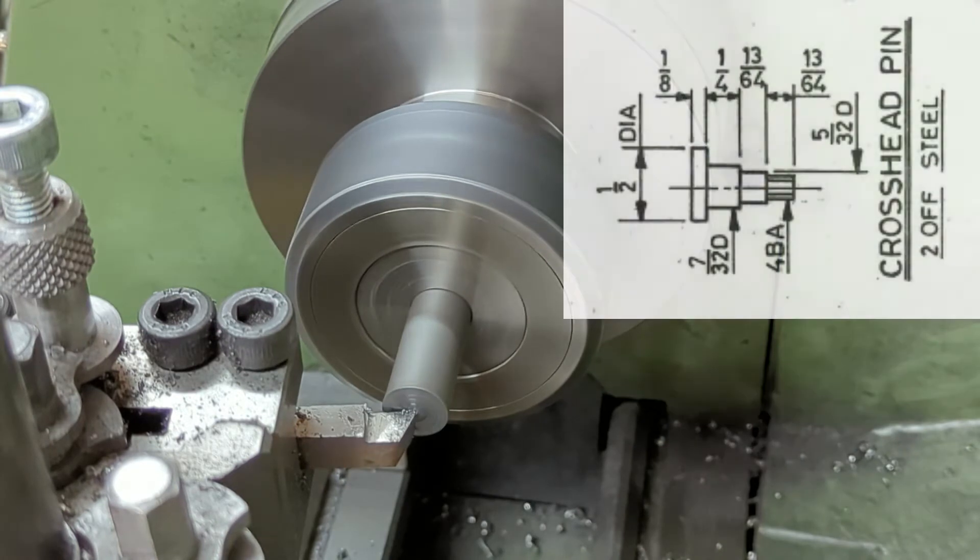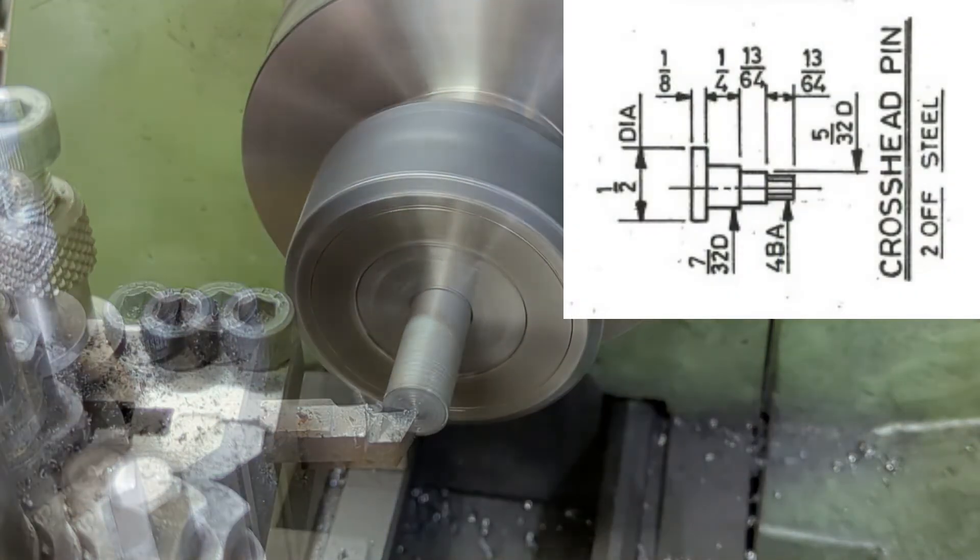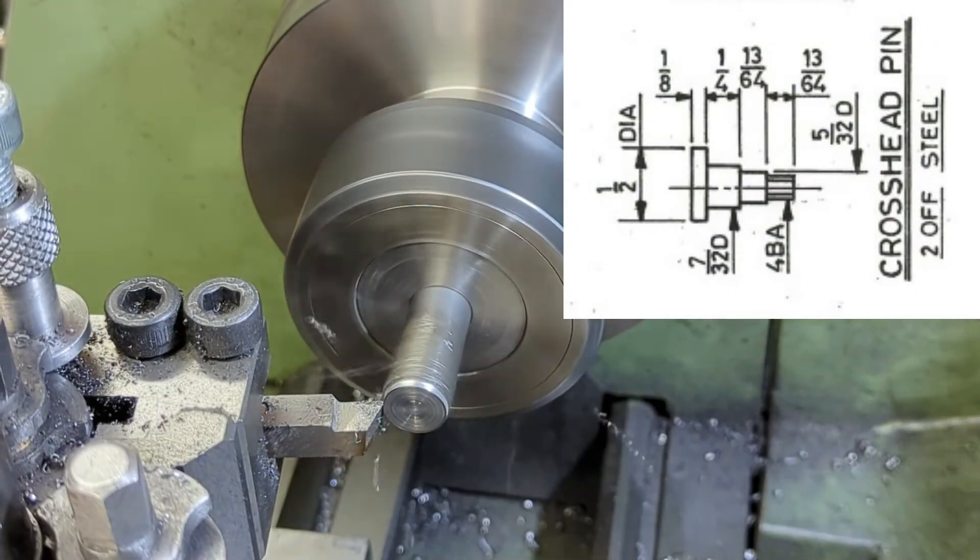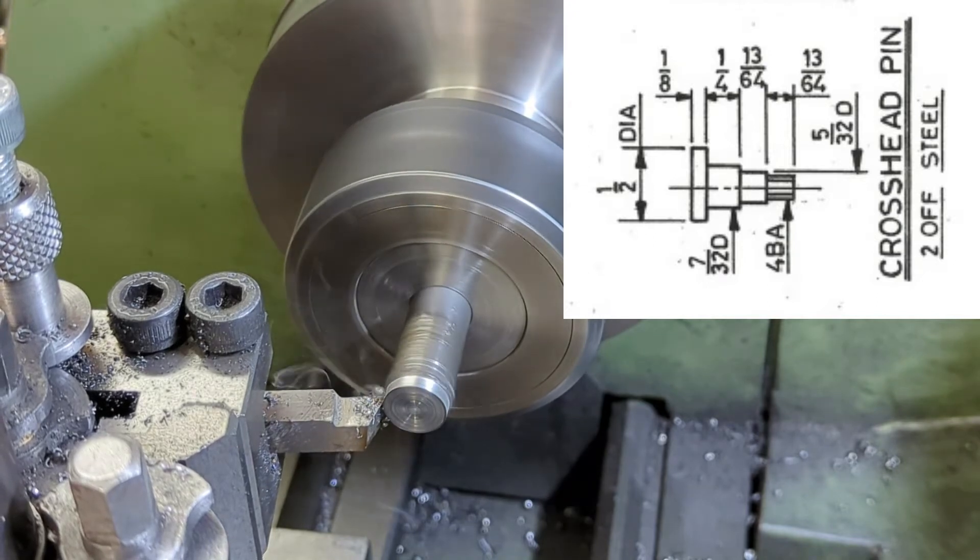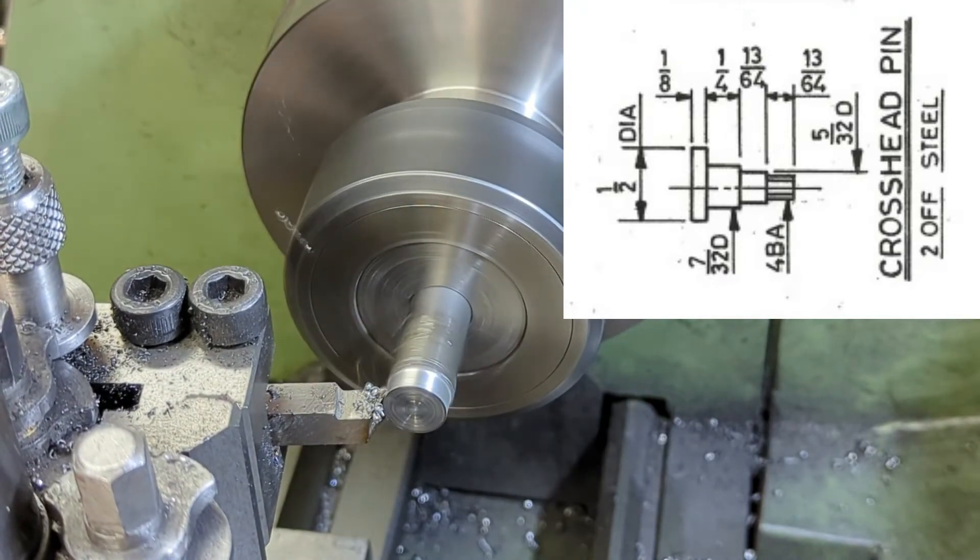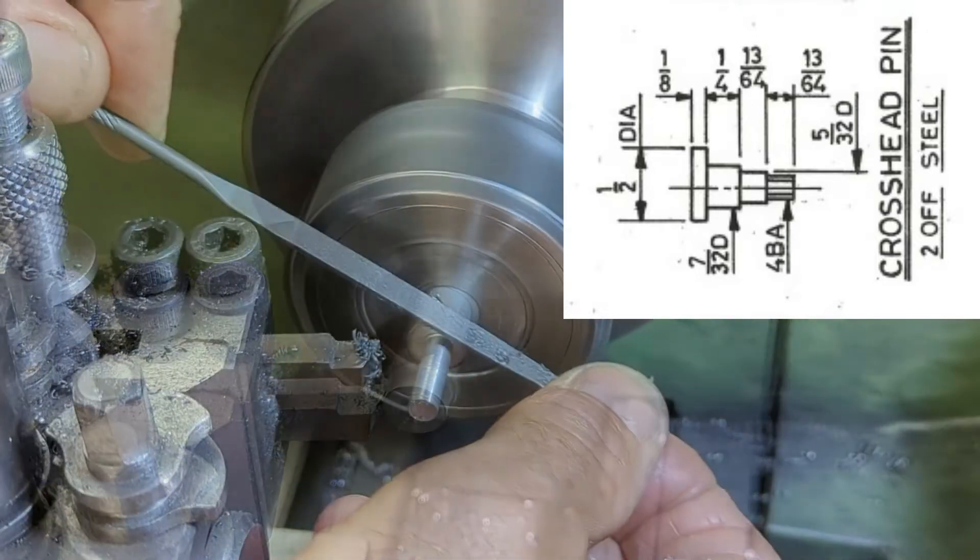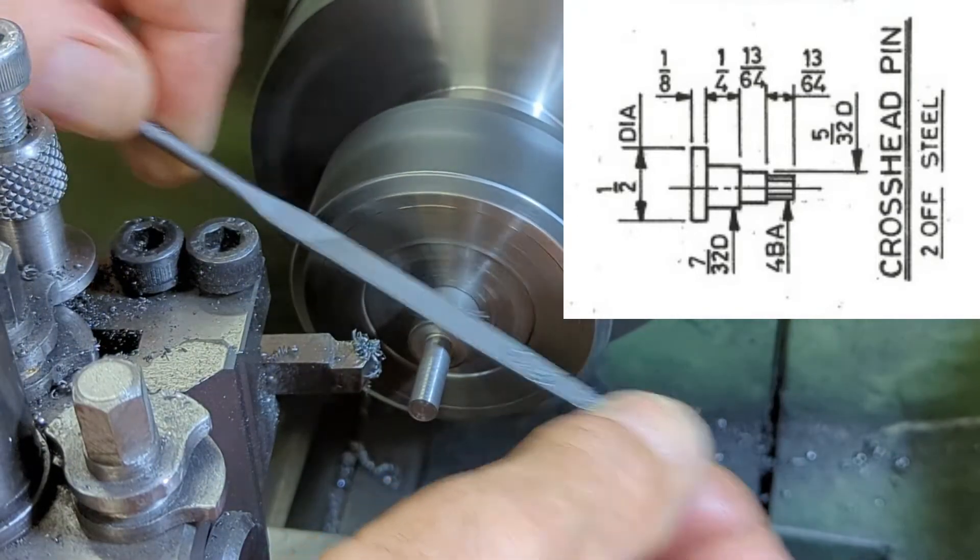I do of course start with Don's drawings, but as I don't work in Imperial, I do need to convert all the dimensions into metric. For a part as simple as this, I would normally print off the relevant part of the drawing and mark up the metric equivalents for each of these dimensions.